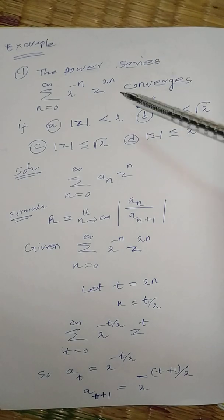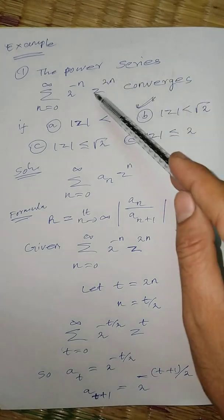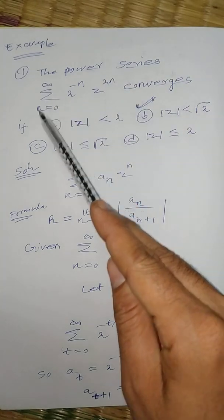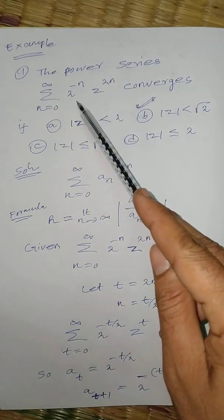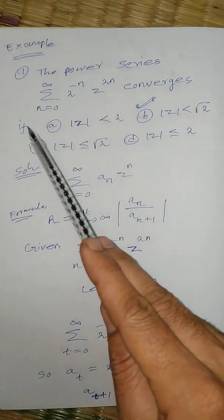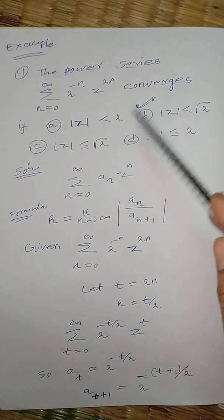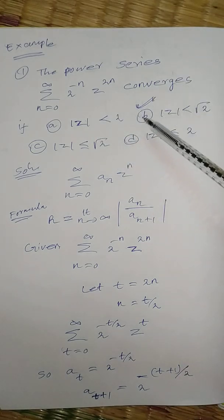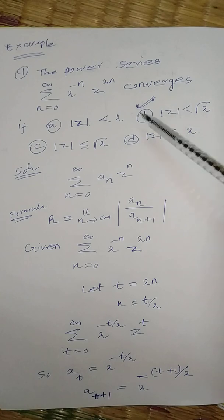Example one. The first power series example. Summation n equal 0 to infinity 2 power minus n z power 2n converges if four options are given. This is an important problem. Frequently asked, this type of problem. The solution.